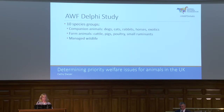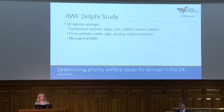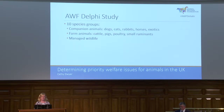In this study we identified 10 species groups to focus on from the outset: companion animals — dogs, cats, rabbits, horses — and we also attempted to look at exotics, though that was very ambitious given the scale. For farm animals we looked at cattle, pigs, poultry, and small ruminants. We also looked at managed wildlife, which was also one of our more ambitious projects. These multi-species groups were really very challenging for our experts.